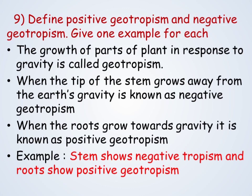Define positive and negative geotropism. Give an example for each. The growth of parts of a plant in response to gravity is called geotropism. When the tip of the stem grows away from the earth's gravity, it is known as negative geotropism. Whereas when roots grow towards the earth's gravity, it is called positive geotropism. Example: stems show negative and roots show positive geotropism.